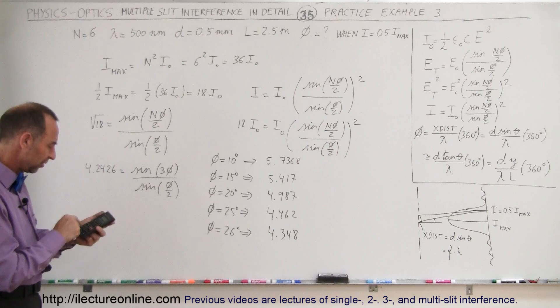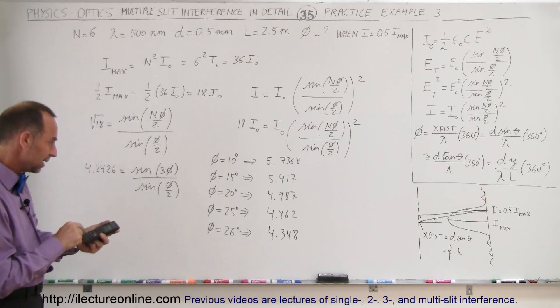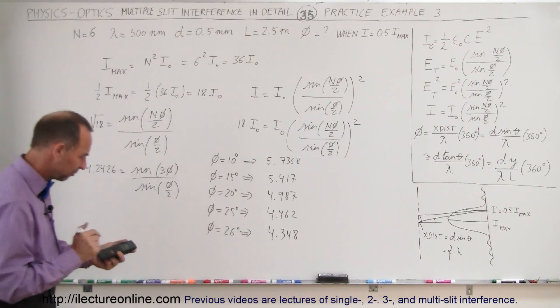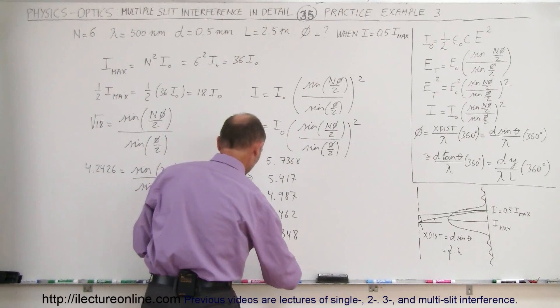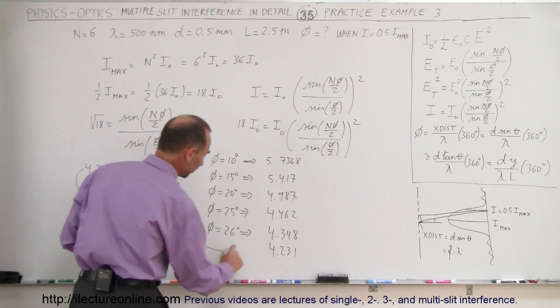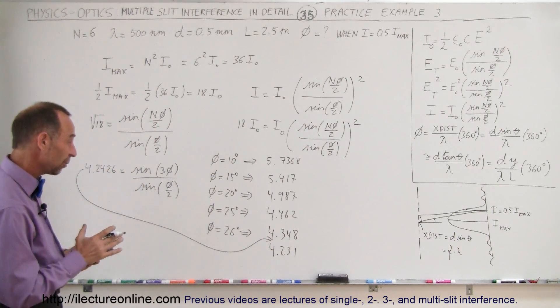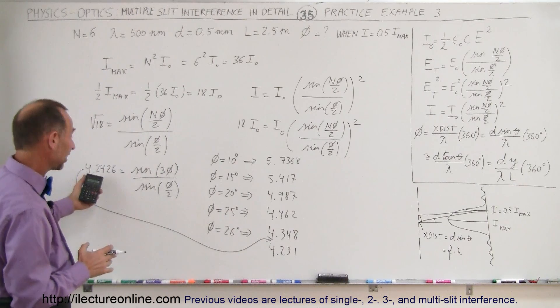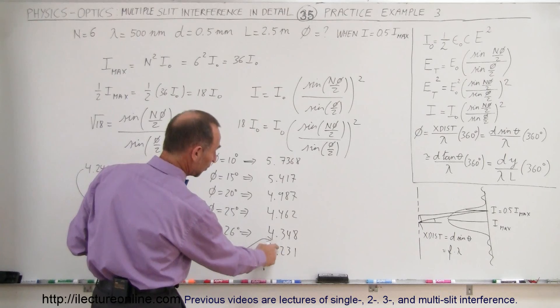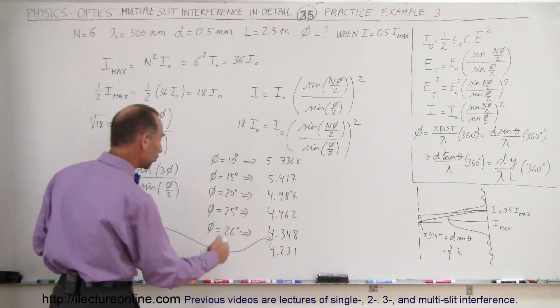Let's try 27 degrees. So 27 times 3 is 81, so sine of 81 divided by 13.5, take the sine of that, and I get 4.231. Notice 4.2426 is somewhere in between those two, which means I get a number somewhere between 25 and 26 degrees. It looks like it would be much closer to 26.